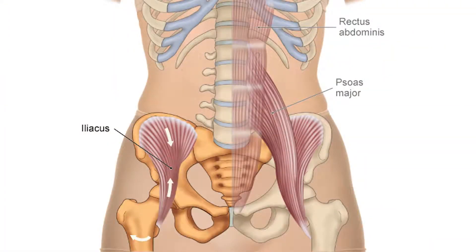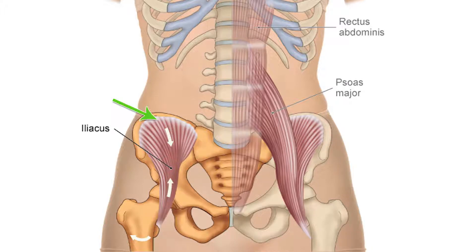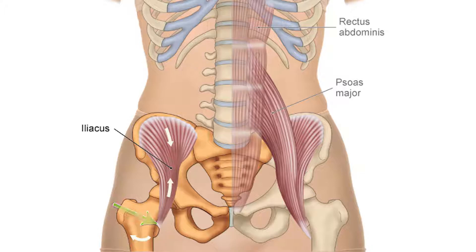Here we have an anterior view of the iliacus. On the right side we see it alone, and on the left side we see it along with the psoas major. When the iliacus and psoas major are considered together, very often they are grouped together as the iliopsoas muscle. The iliacus attaches from the internal surface of the ilium and then goes down distally to attach onto the lesser trochanter of the femur.